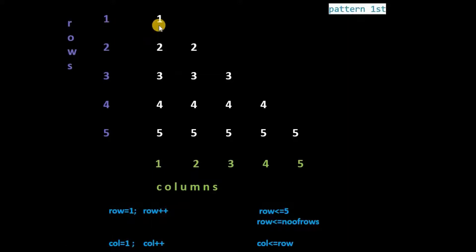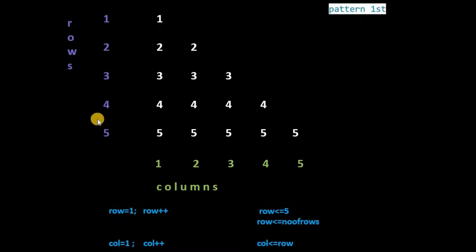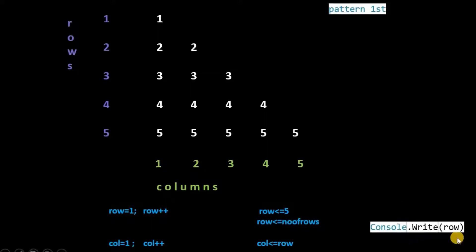On the first row, 1 is printed one time. On the second row, 2 is printed two times. On the third row, 3 is printed three times. On the fourth row, 4 is printed four times. On the fifth row, 5 is printed five times. So the number printed is the row number. While printing, we will write console.Write(row).